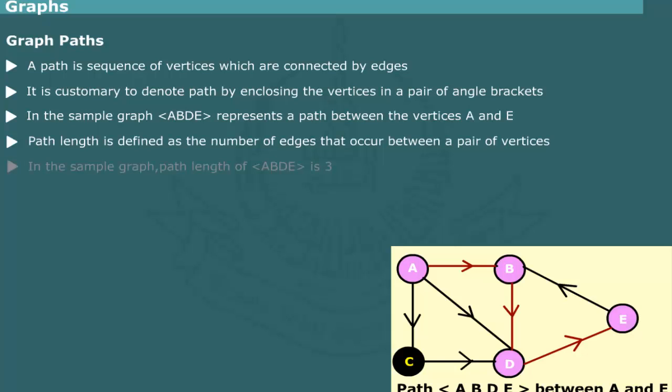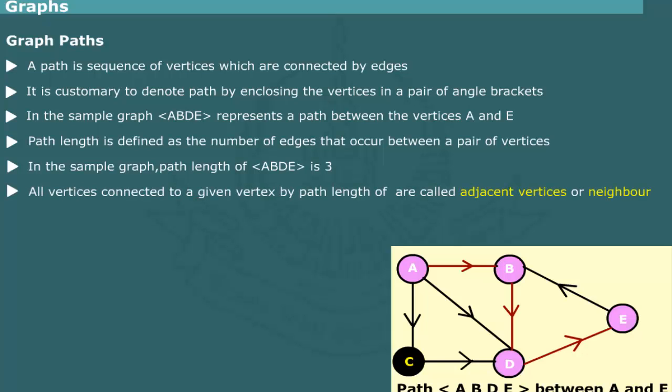For example, the length of path <a,b,d,e> is 3. The vertices which have path of length 1 are called adjacent vertices or neighbors. For example, in this figure, vertices b, c, and d are neighbors of vertex a.